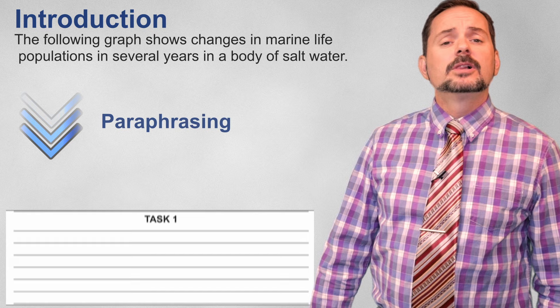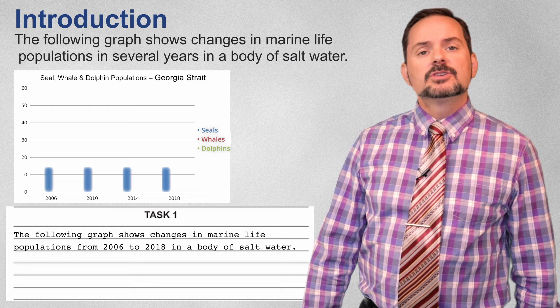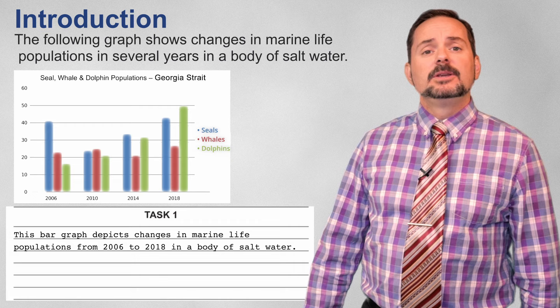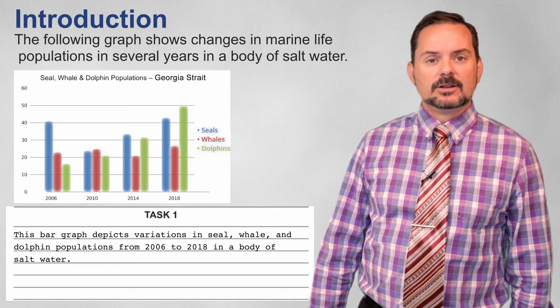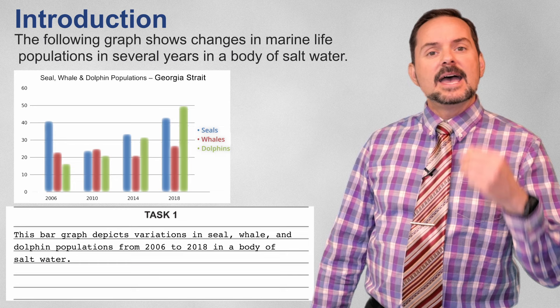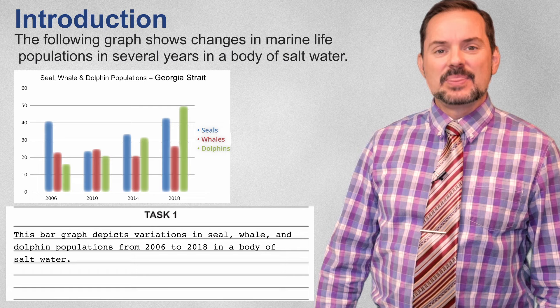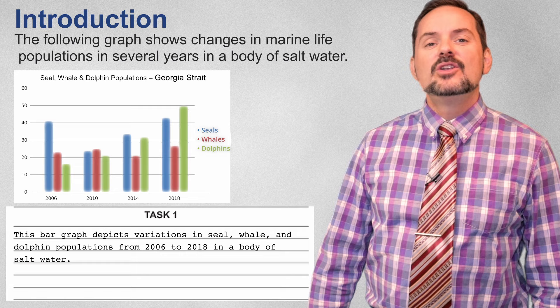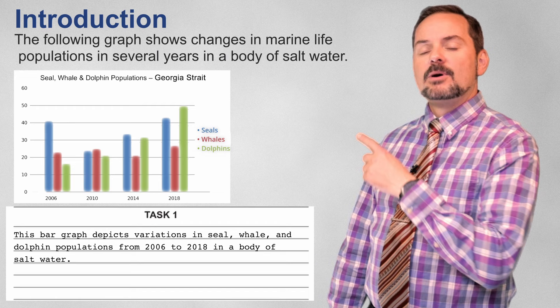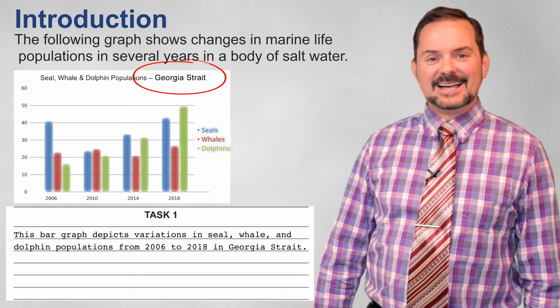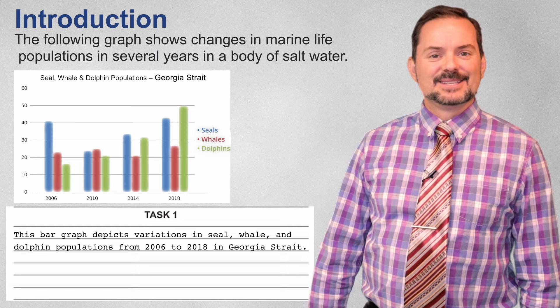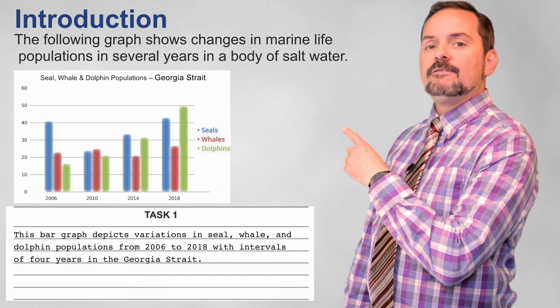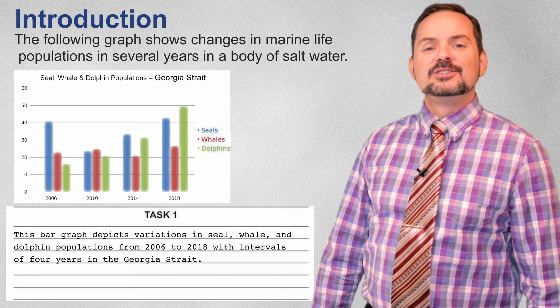As reflected by the y-axis, the population is measured from 0 to 60 animals with intervals of 10. Let's highlight the clear differences between simply paraphrasing and giving greater detail. Instead of just writing 'graph', we add the word 'bar' — it's a bar graph. Instead of simply writing 'marine life', we write seals, dolphins, and whales using the title. Also notice that instead of writing 'body of water', here we write Georgia Strait, again using the title.